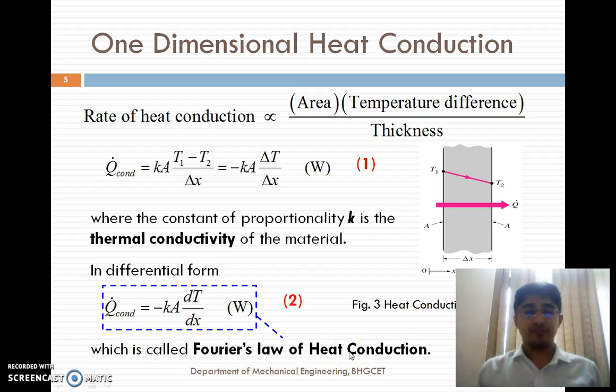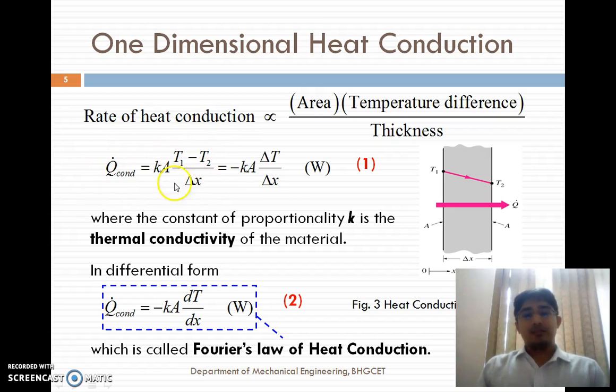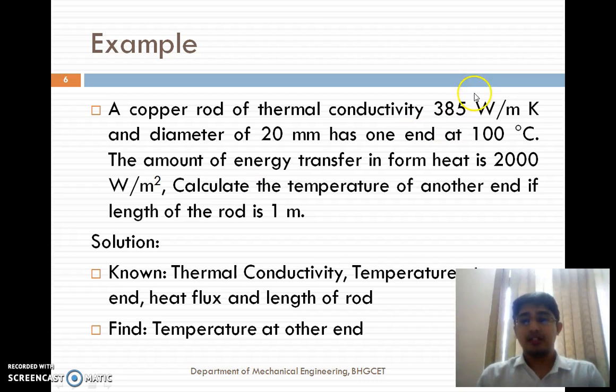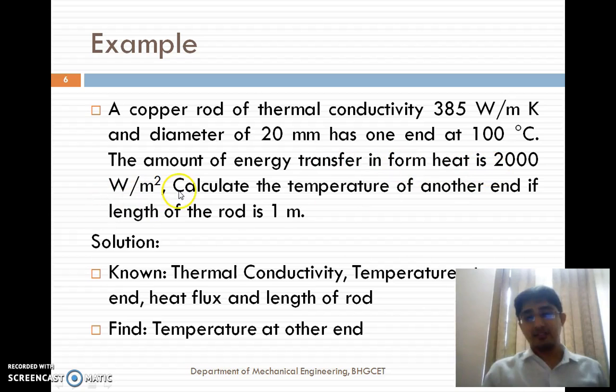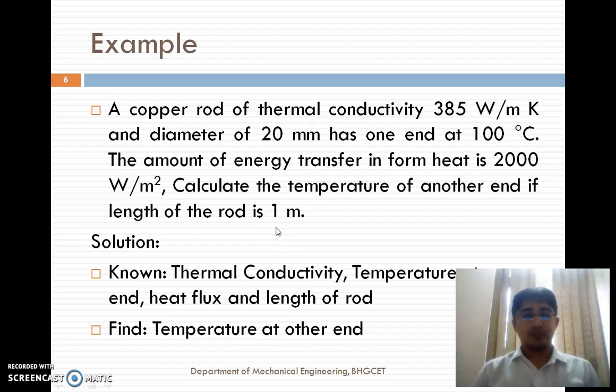We will utilize Fourier's Law of heat conduction to identify any one unknown parameter if the rest of the parameters are known. Let us take one example: A copper rod of thermal conductivity 385 W/m·K and diameter 20 mm has one end at 100°C. The heat flux given is 2000 W/m². Calculate the temperature at the other end if the length of the rod is 1 meter. What is known: thermal conductivity, temperature at one end, heat flux, and length of the rod. What we have to find: temperature at the other end.